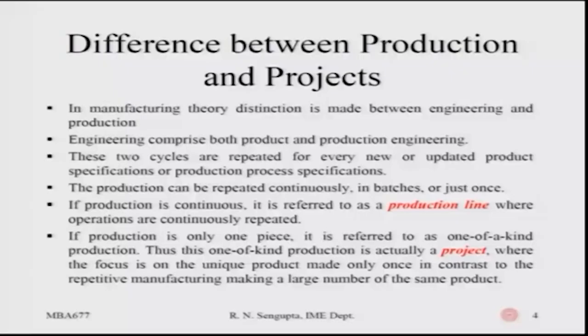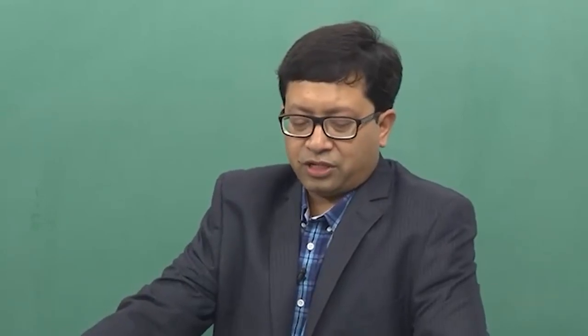The difference between production and projects: production is basically a continuation — producing a similar type of car, similar machine tools, or similar cloth in a garment factory. In manufacturing theory, a distinction is made between engineering and production. You have different types of engineering concepts which are used and then interpreted in the production concept. Engineering comprises both product and production engineering — product engineering involves designing the product, finding essential features, re-engineering, and so on.